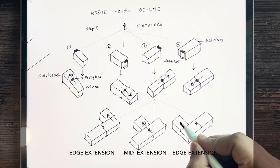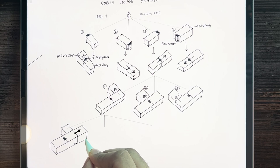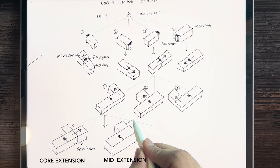Now let's elaborate on other services of the house. We have three more extensions in which we can place services attached to the core of the house, then to the middle of the house, and to the other end of the house. This way, we can build various options for the house.